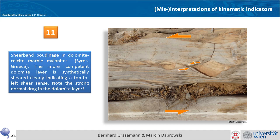Also in Syros there are nice examples from dolomite layers in calcite marbles. High-grade metamorphism means the viscosity contrast between dolomite and calcite is not that high, so the dolomite layer was deformed in this nice sigmoidal shape shear band boudinage, giving you a top-to-the-left shear sense.